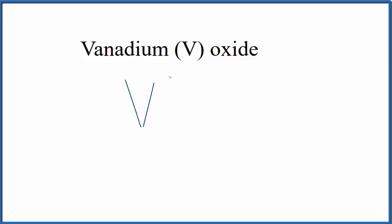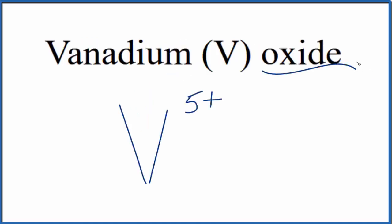That means vanadium is going to be 5+. Oxide is from the element oxygen, so we'll put O.